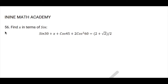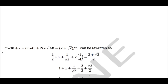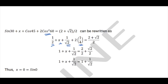Question 56: We need to find x in terms of a sin ratio. Substituting sin30 = 1/2, cos45 = 1/√2, and cos60 = 1/2 (so cos²60 = 1/4) and simplifying, we get x = 0.